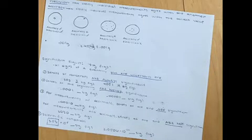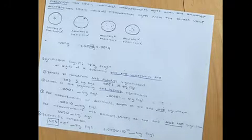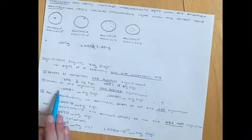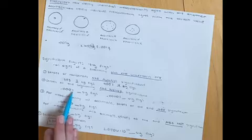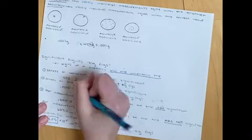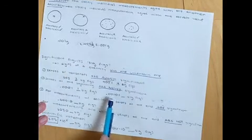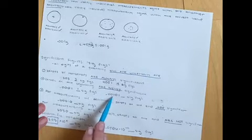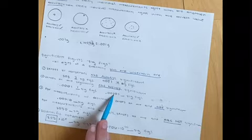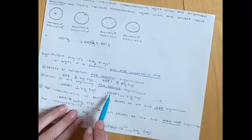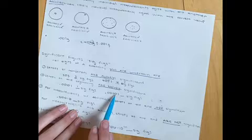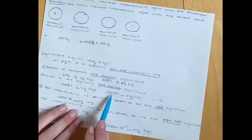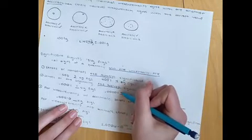Another rule: zeros at the beginning are never significant. This applies mainly to decimals. For example, leading zeros before a non-zero digit are not significant — so a number like 0.004 has one significant figure. And for something like 0.1004, the leading zeros aren't significant, but the zero between non-zero digits is, giving three significant figures.